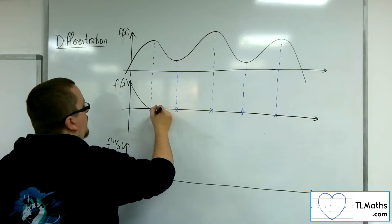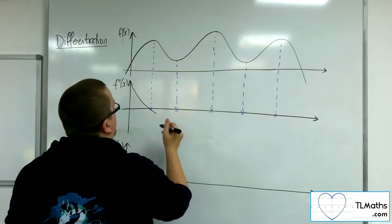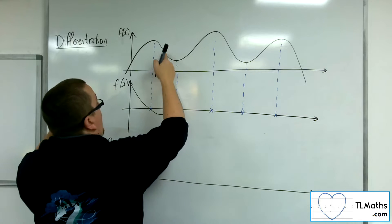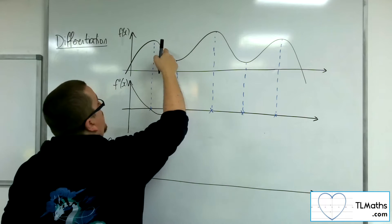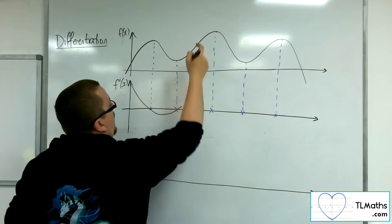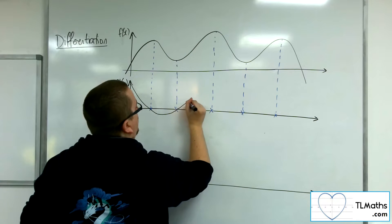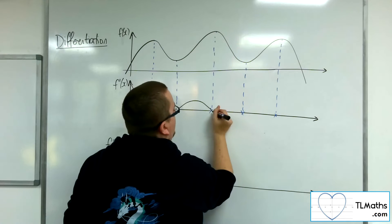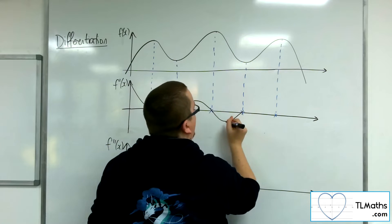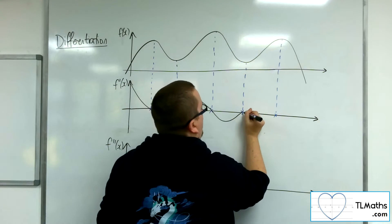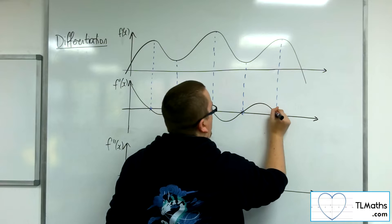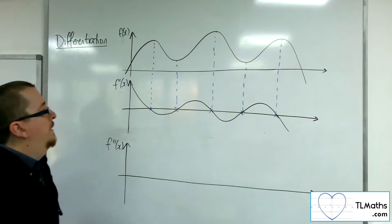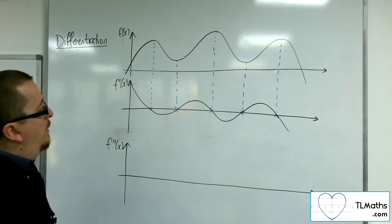So going from positive to negative gradient, it's going to be a maximum point. There's going to be a maximum negative gradient, then we're going back into positive gradient, we hit a maximum positive gradient, then we're going into negative gradient, hit a maximum negative gradient, then into positive, and then back into negative gradient. So this is what that curve will look like.